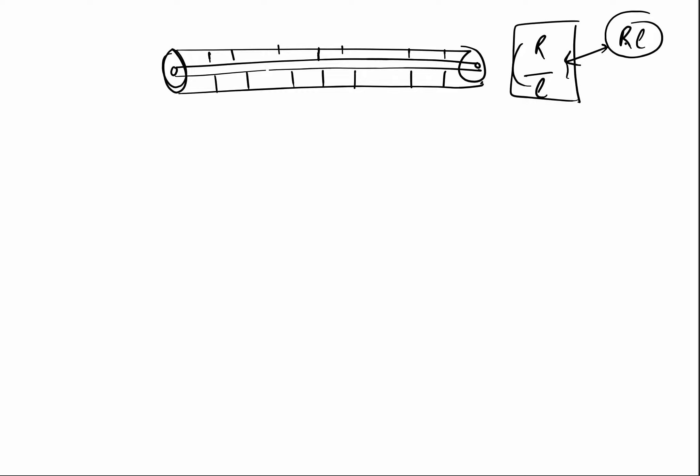This is one method for finding resistance. We will now formulate a step-by-step method for calculating resistance, similar to what we did for capacitance. The first step is to choose a coordinate system appropriate for the given geometry — for example, for a coaxial cable we would use cylindrical coordinates.